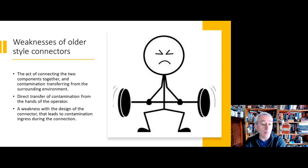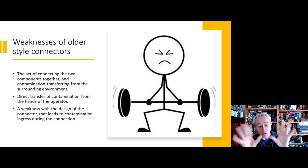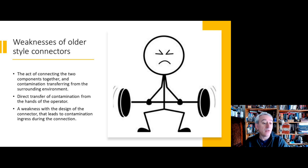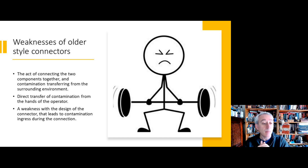With old-style connectors, the process was very much reliant upon the technique of the person carrying it out. If there was any contamination on the hands, this could be transferred into the edge of the connectors and hence into the fluid flowing through the product, thereby creating a risk of microbial contamination. So the whole aseptic connector concept is designed to overcome this weakness — hence the weightlifting guy on the slide.